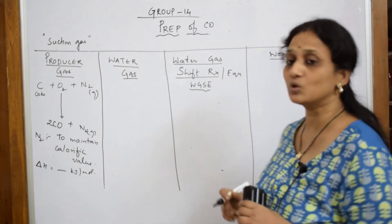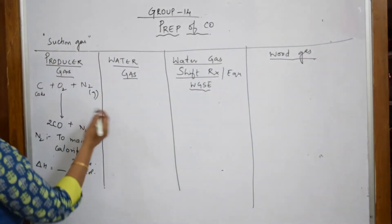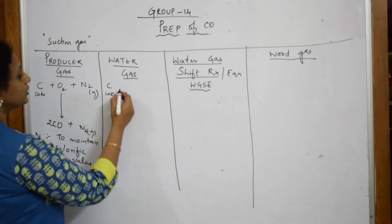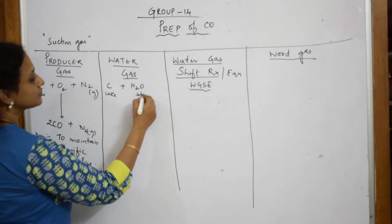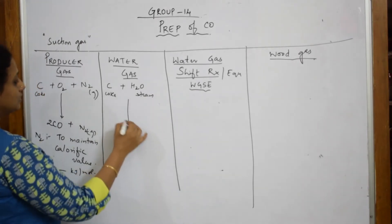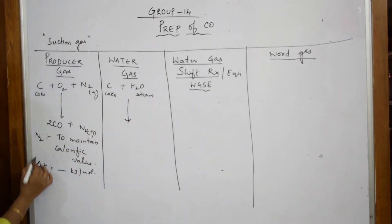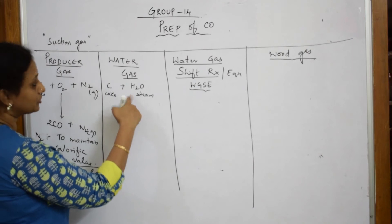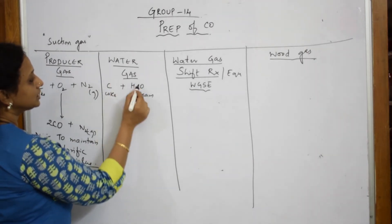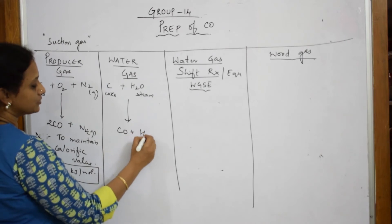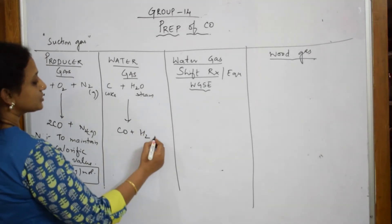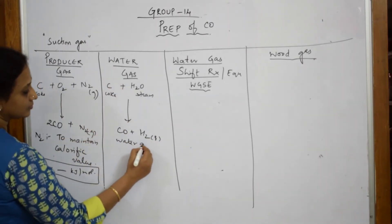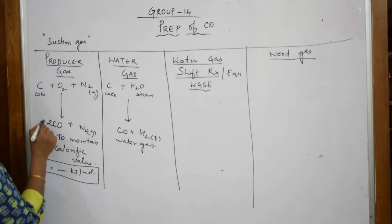Now let us come back to water gas. Again the same thing — you are going to pick up coke. Here, what are you going to do? You are going to add steam to this. These reactions are highly exothermic. But here, when you heat coke over steam — high amount of steam — observe: you get carbon monoxide plus hydrogen. This is called water gas, and that particular reaction is called producer gas.